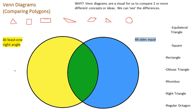Last but not least, if it doesn't match either set of information or criteria, it's going to fit outside. So anything that doesn't have at least one right angle or all sides equal will be placed outside of the circles because it doesn't match any of the criteria.